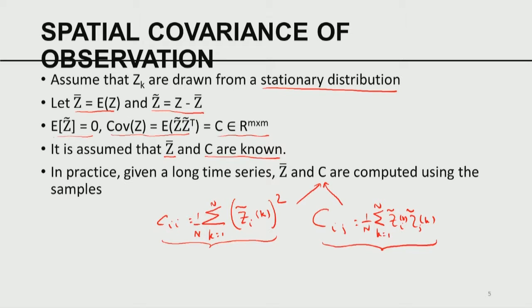Stationarity assumption is fundamental in almost all time series analysis. I am assuming I have a parallel time series at each of the m locations, one for each station. From each of these parallel time series, I can compute the statistics — the individual mean, the mean vector, the individual variances, and the covariances. These together summarize the vector z-bar and the matrix C, and that can be done given a long time series at various stations. We assume we have availability of z-bar and C at m stations.